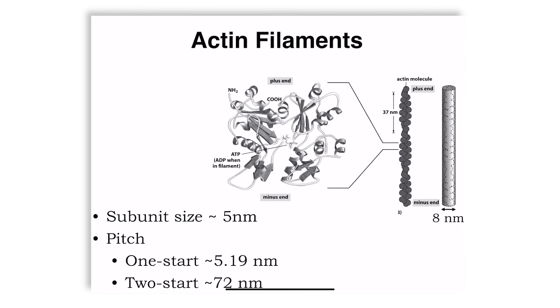Actin, on the other hand, forms these kind of meshwork structures which consist of just one kind of protein, typically globular actin or G-actin with a subunit size of five nanometers and a pitch which, if you consider a one or two protofilament system, is 5.9 nanometers or 70 nanometers. Pitch, if you remember, is the height traveled for one circle to be completed.